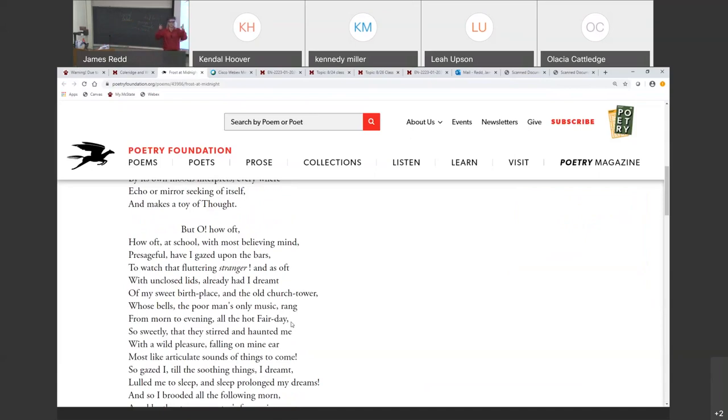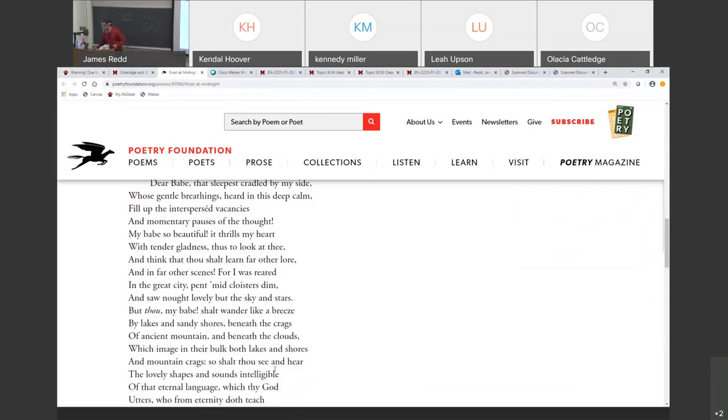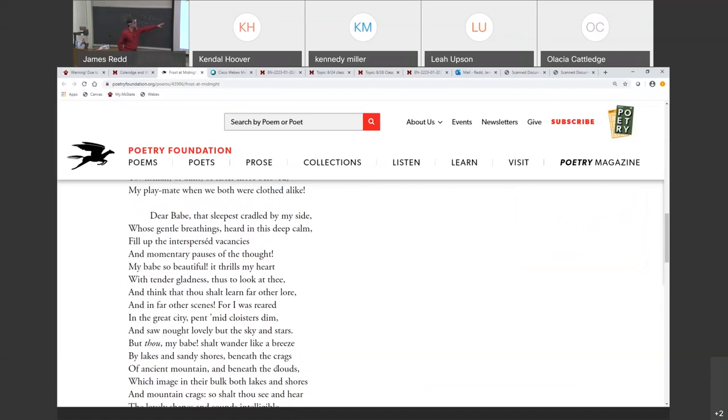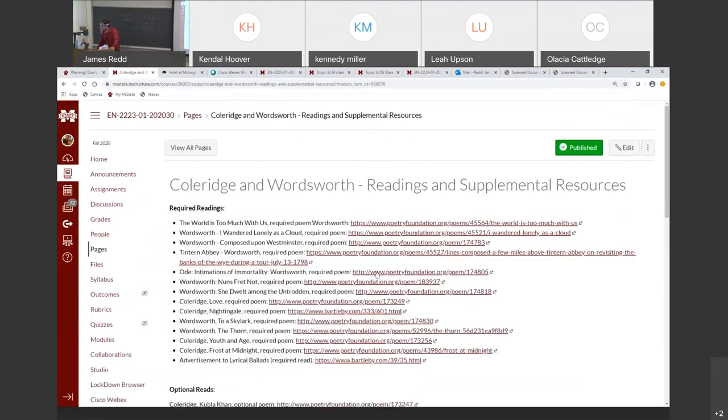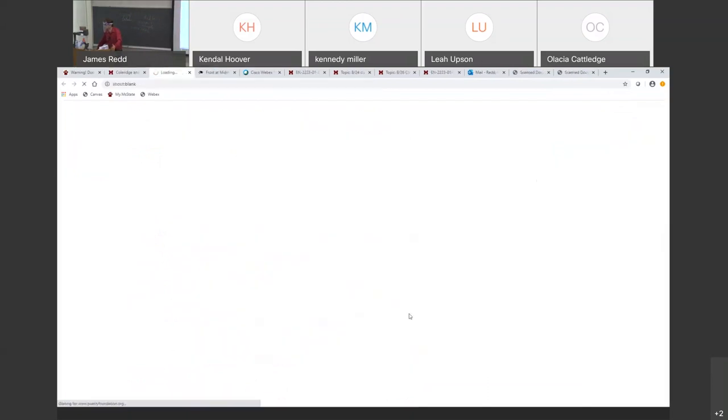And he remembers a time in his past when he was stuck in school and he hated it. And how did he get out of that? By daydreaming, by using the power of the imagination. That's what we're seeing right here. And then he looks back to his son and he starts addressing his son, his little baby. And he says, I hope that you—now I've moved out into the country. I hope that you will have a better teacher than I did in school. You'll have a better teacher in nature. So we see his hopes and dreams for his kid in this poem right here.